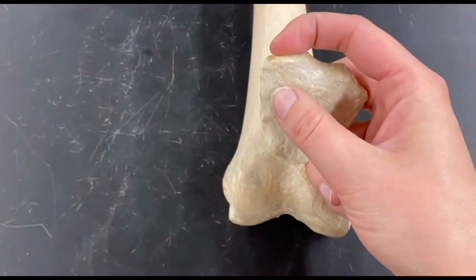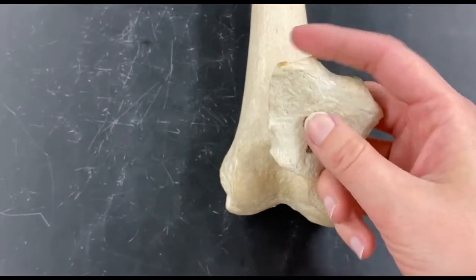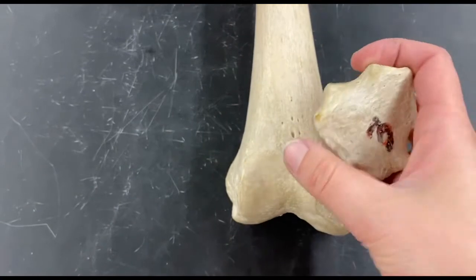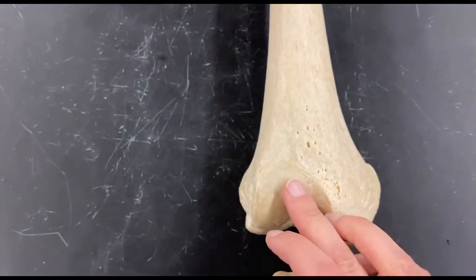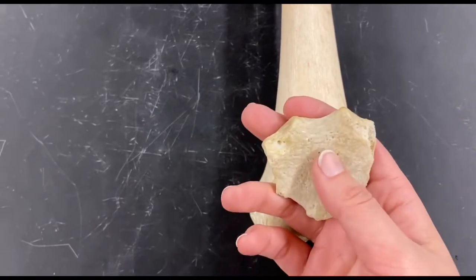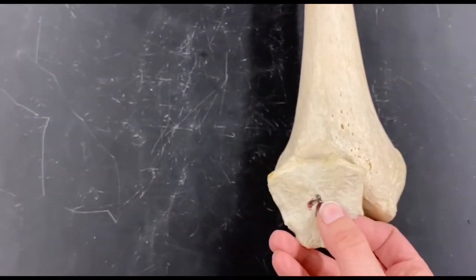And here's your patella. This is the rough side which is going to face anteriorly, but the part that's going to articulate with the patellar surface is the smooth articulating surfaces of the patella, and it would just sit right there.